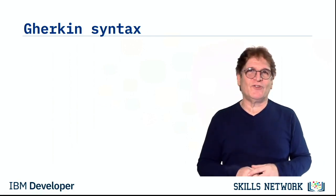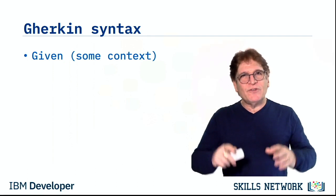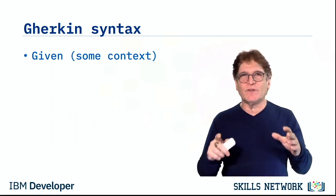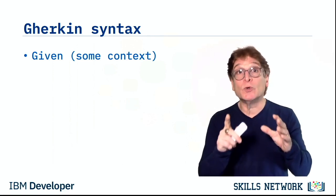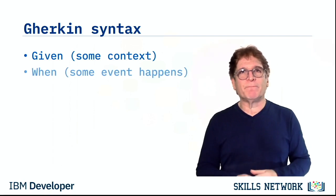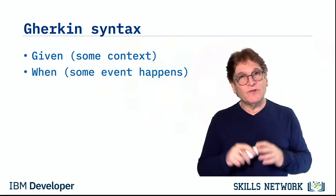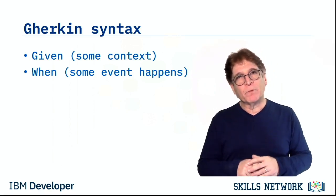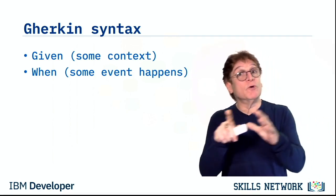Here's how the Gherkin syntax is used. Given some context — this is setting up the context or the precondition that sets the stage for the test. The purpose is to put the system in a known state before the user or external system starts interacting with it. When some event happens — this is the principal action or actions that describe what's being performed, taking you from the initial state to the new observed state.